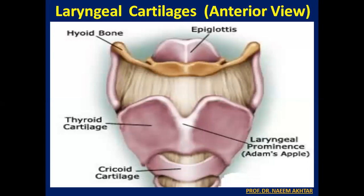This anterior view of the larynx shows different laryngeal cartilages. You can see the epiglottis, the thyroid cartilage, and the lower one is the cricoid cartilage. The thyroid cartilage has the Adam's apple in the middle, that is the laryngeal prominence.